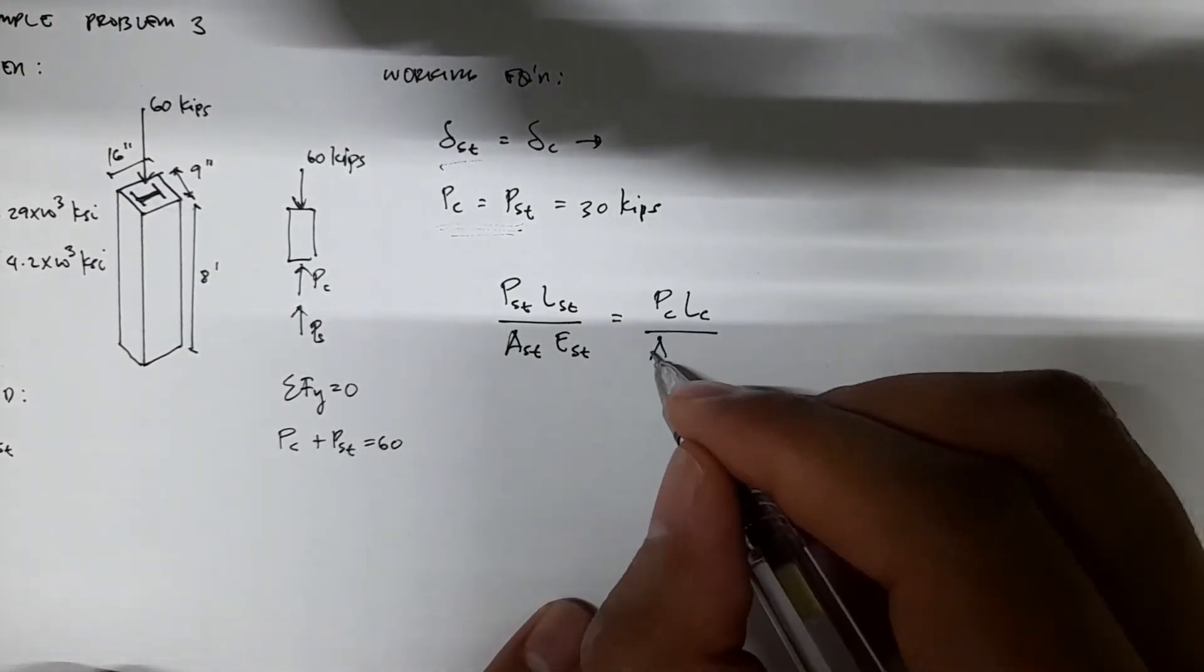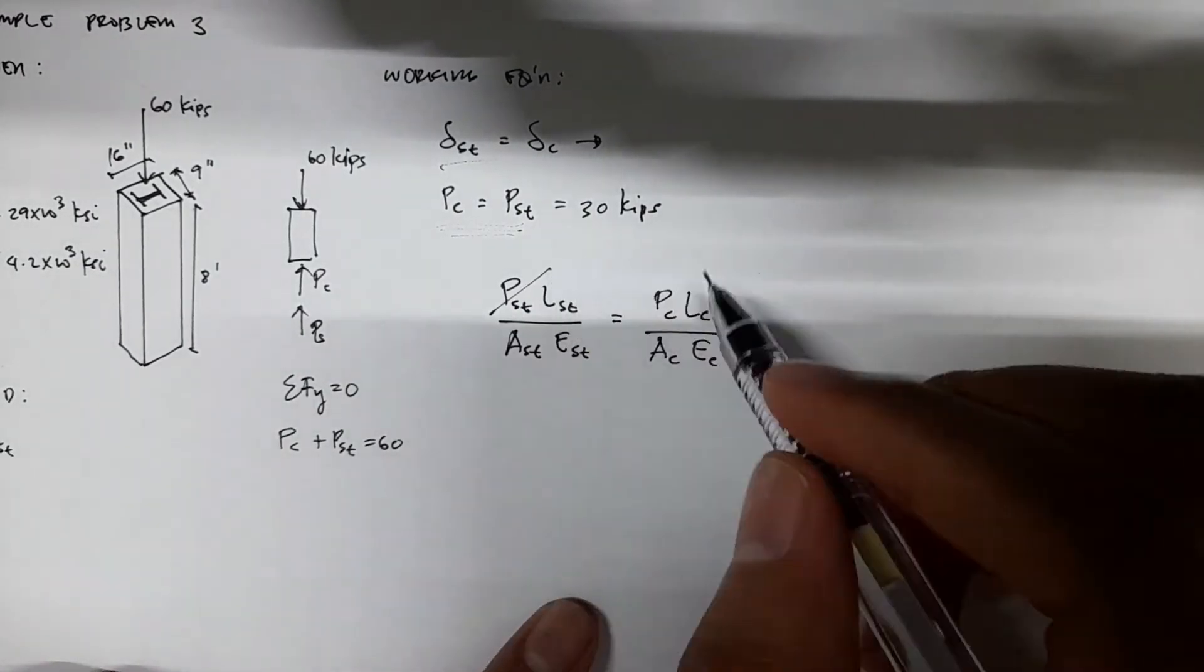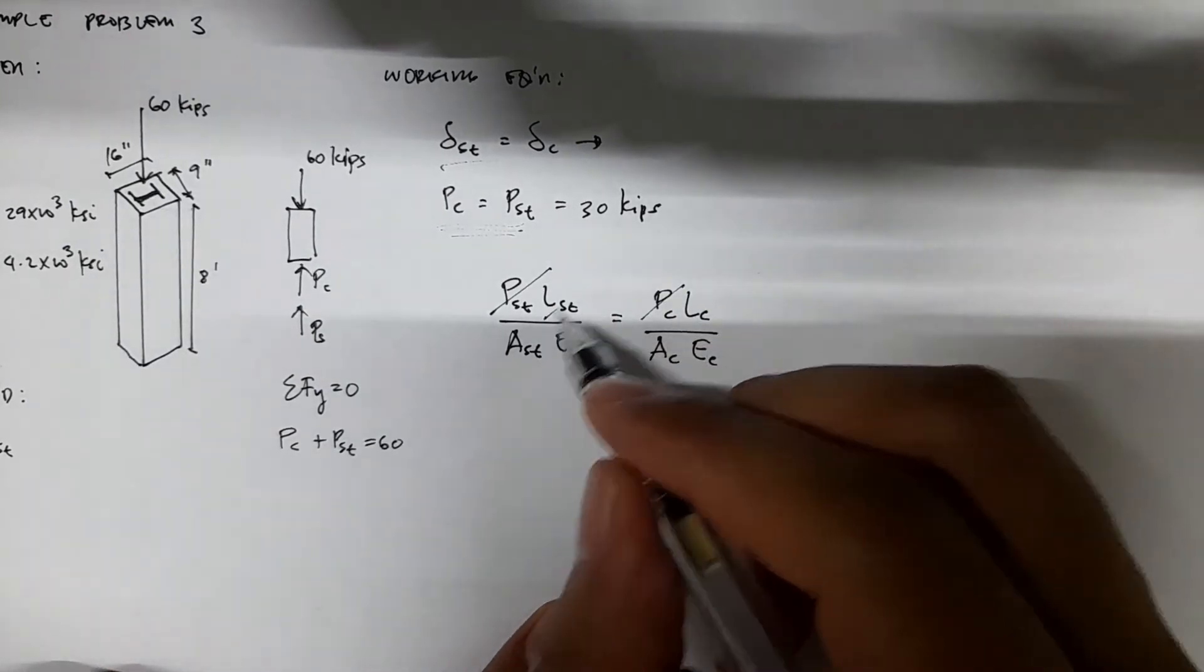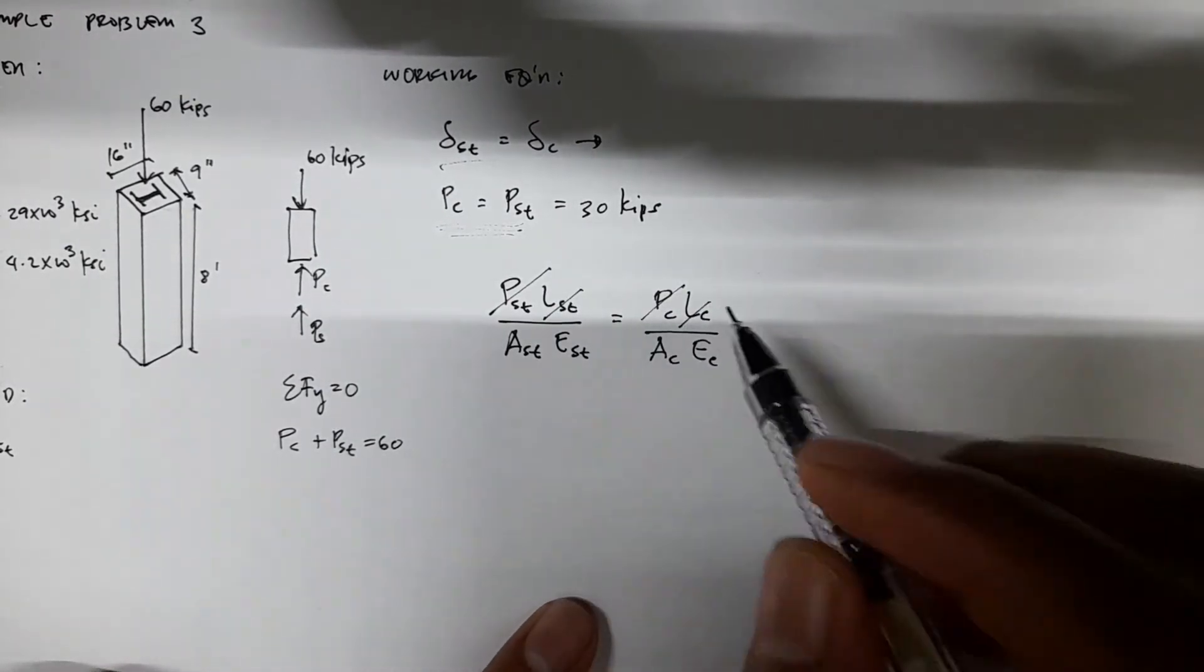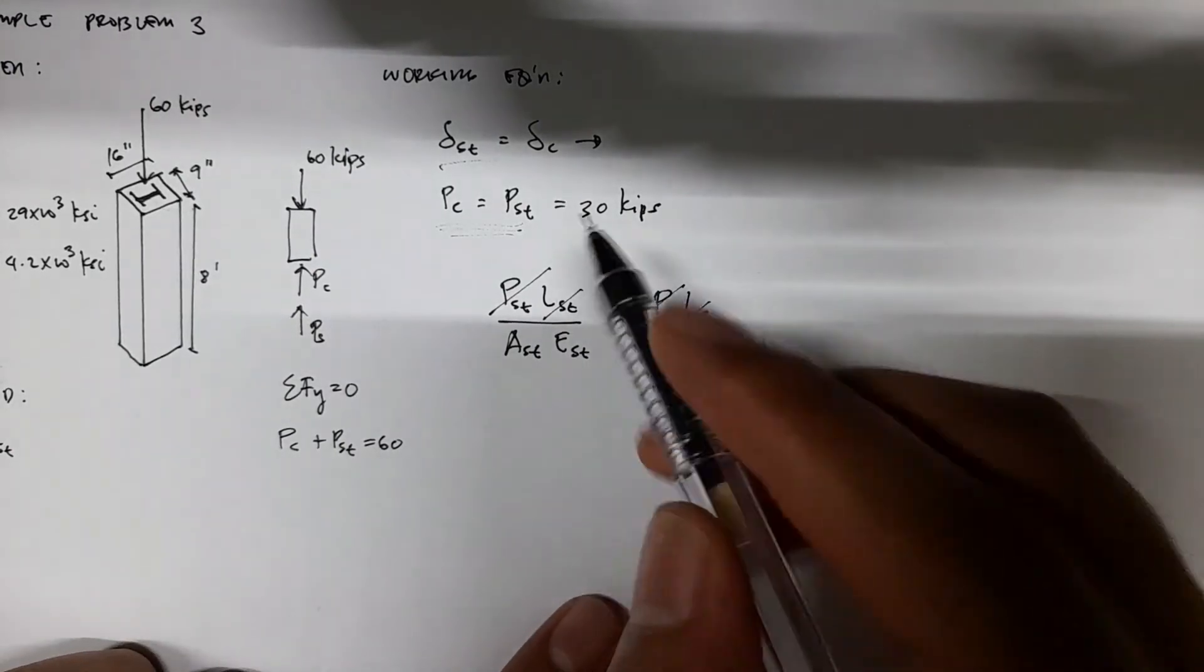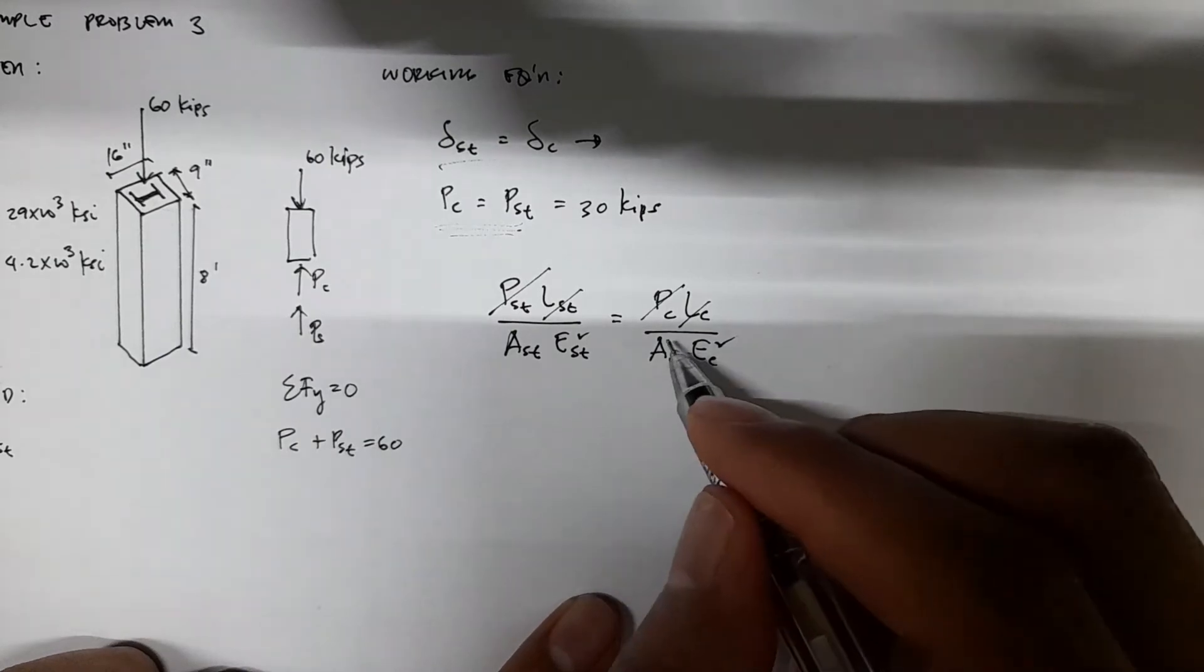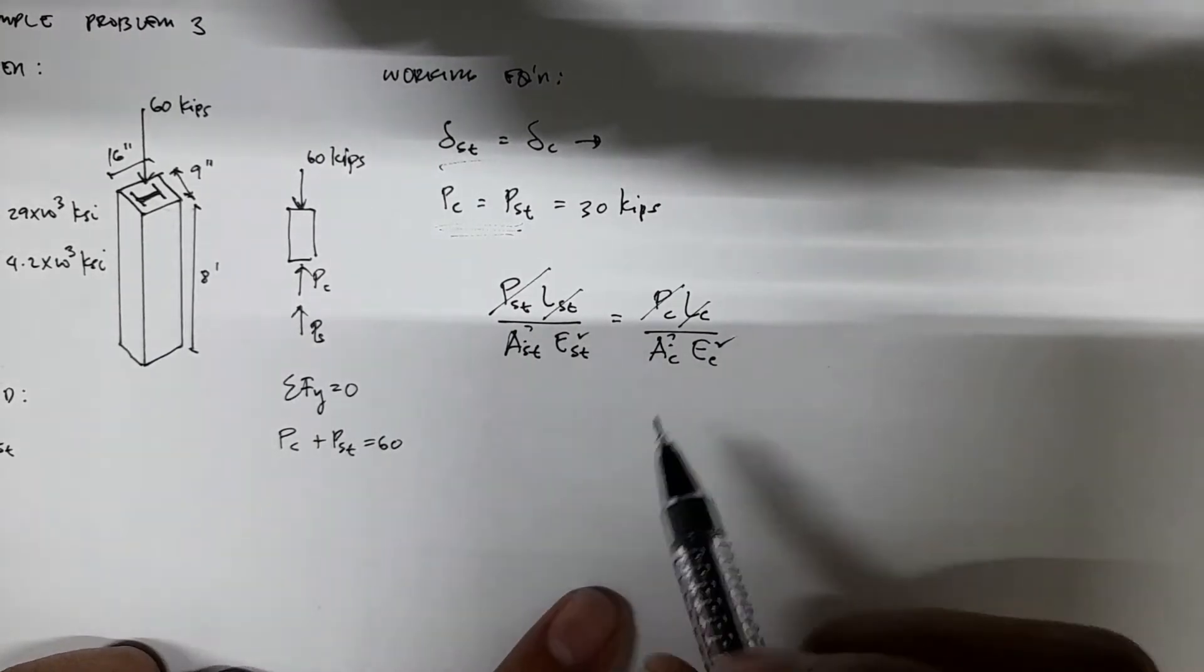The lengths cancel out because both are equal. The forces also cancel out because both are equal. This is known, this is known, this is unknown, this is unknown - we are after Ast.